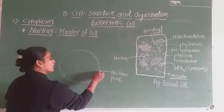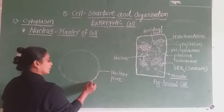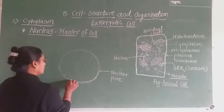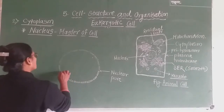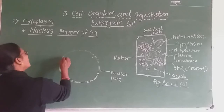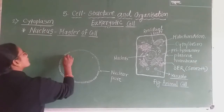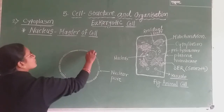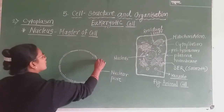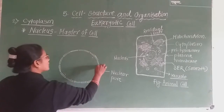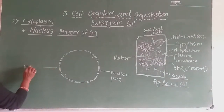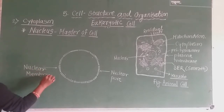In such a double nuclear membrane we can observe an outer and inner membrane, with a gap between these two layers. This gap is called as nuclear space or perinuclear space. This structure is the nuclear membrane.